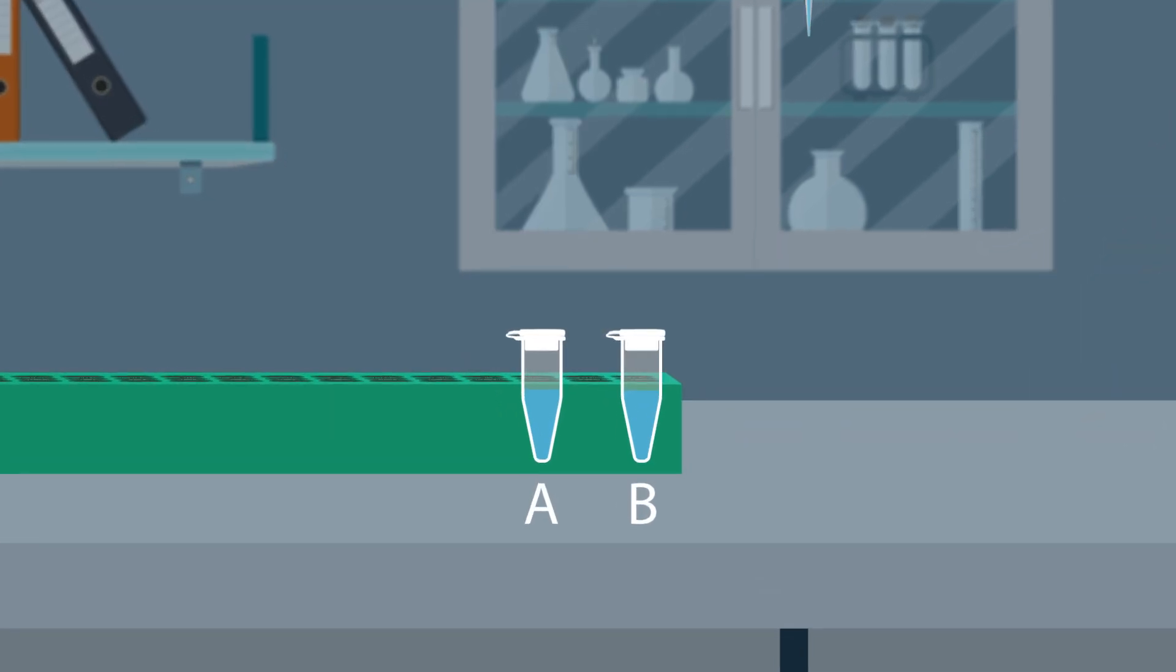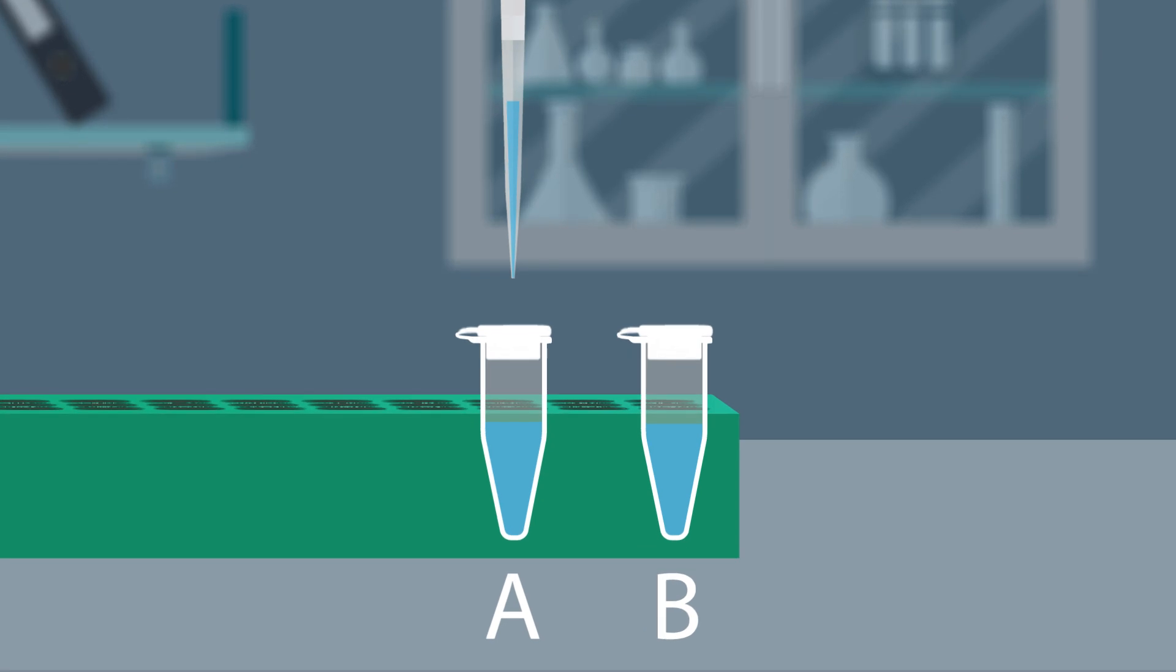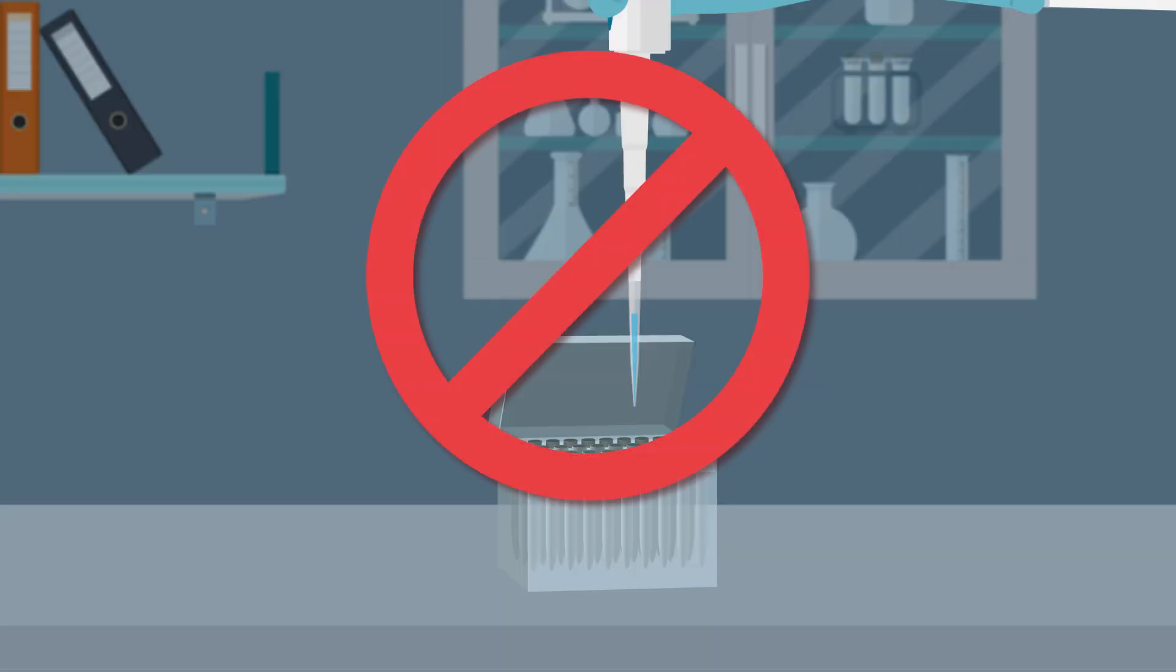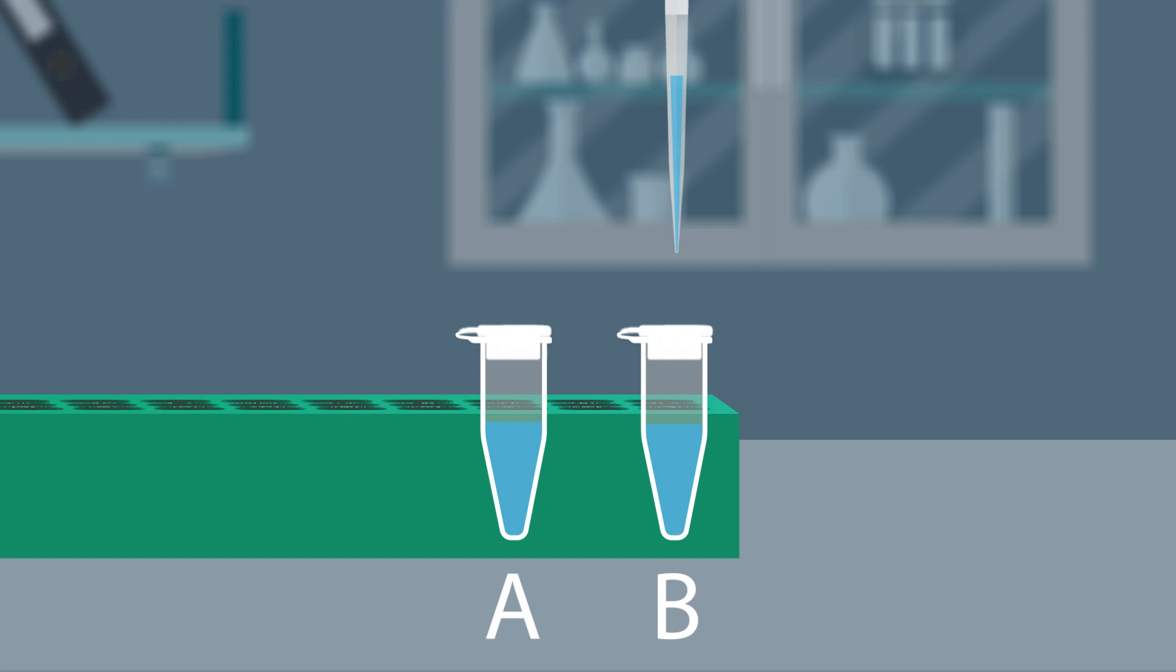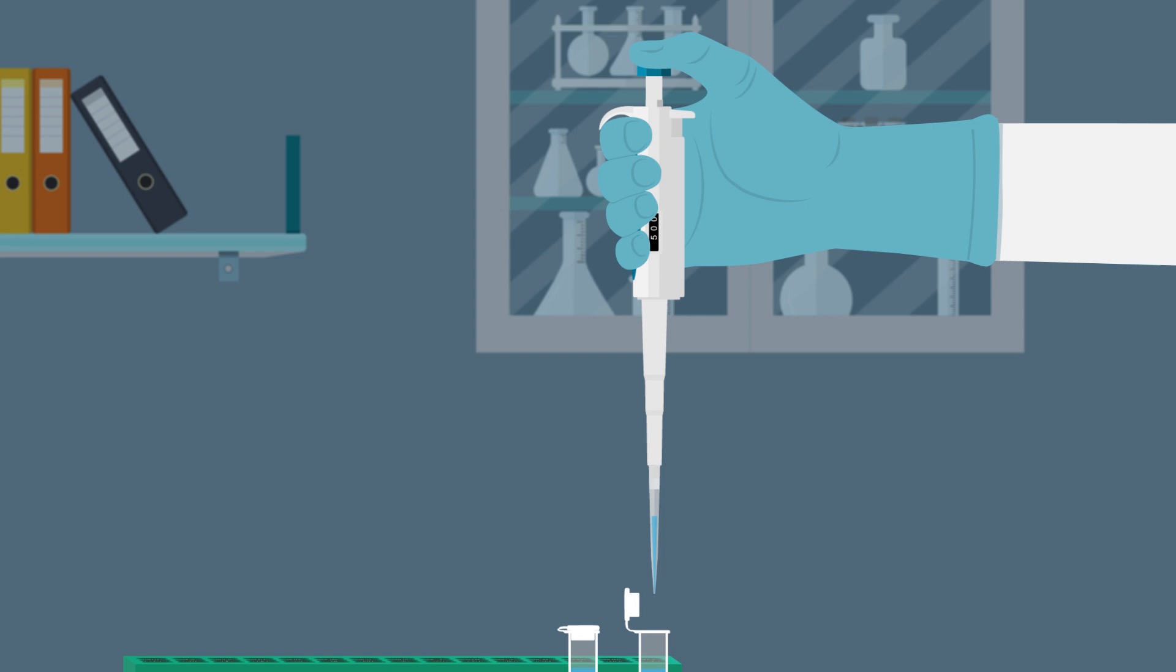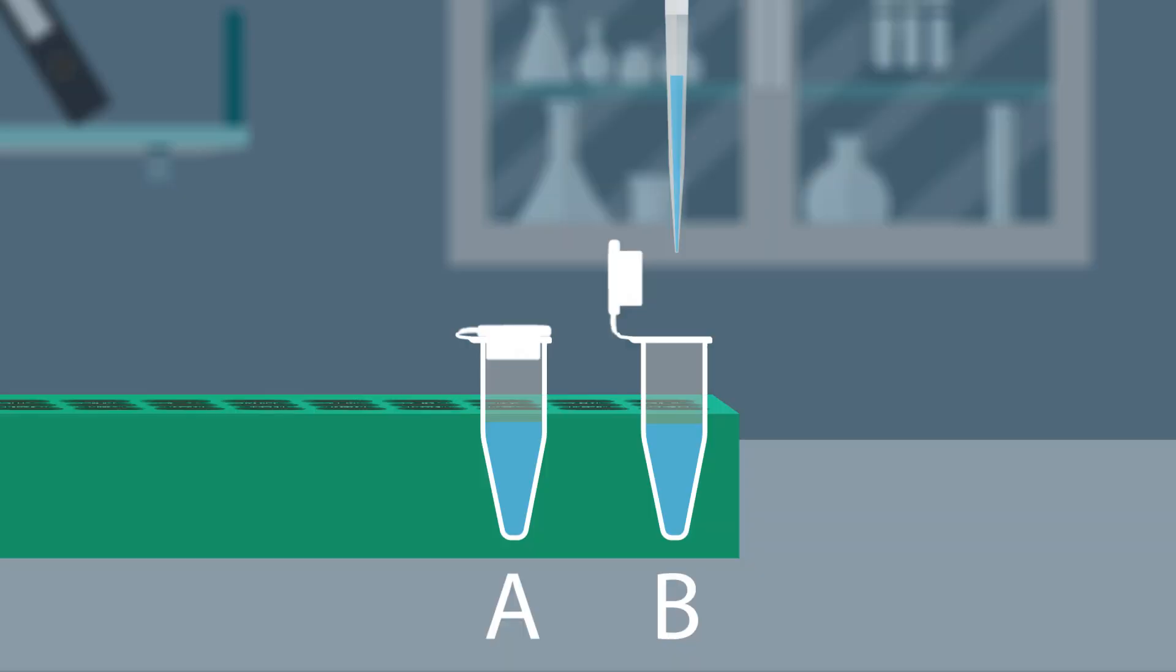When moving the micropipet containing liquid in the tip, it is essential to minimize cross-contamination. Avoid fast movements or hovering over objects in your workspace. It is also recommended that only one container be opened at a time. With your non-dominant hand, open buffer B. Ensure that your hand holding the micropipet remains stable. With your dominant hand still holding the micropipet, thoughtfully move the micropipet into buffer B to be dispensed.